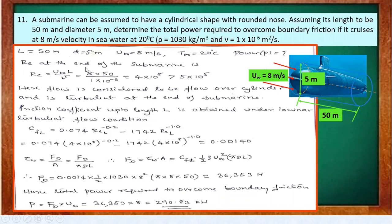The ρ and ν values for seawater at 20°C are given. Find the Reynolds number: Re = 4 × 10⁸, which is in the turbulent region (greater than 5 × 10⁵). The friction coefficient over length L uses the combined laminar-turbulent expression: C_fL = 0.074 × Re_L^(−0.2) − 1742 × Re_L^(−1).